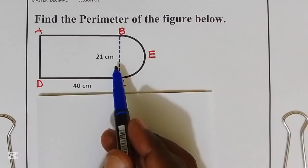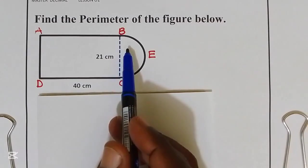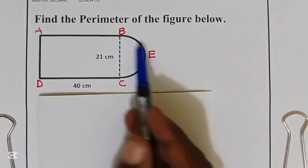As we say, the perimeter is the total distance around the figure.